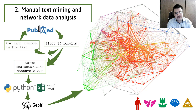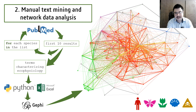Secondly, we performed a study that was a hybrid between text mining and a systematic review of literature, with visualization of our data as a network. We visualized the terms characterizing the ecophysiology of lipoxygenase-carrying bacteria that are pathogens or symbionts. This is the network you can see on this slide — each node is a term and each edge is a co-occurrence of two terms in the same species.